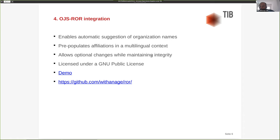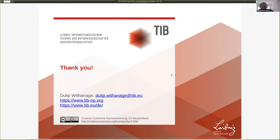If the editor wishes to modify the organization name and still maintain the ROR identifier, it is also possible using the plugin. This can be helpful if the name of the faculty should be displayed alongside the organization name. This plugin is released under a public license allowing free use for any community member. After inserting the ROR ID, the ROR logo with a link to the affiliated institution will be displayed under the author name in the OJS article landing page. I have also linked a demo of how the plugin works — you can access it on GitHub. All the code is free. Thank you all for listening. I'm happy to answer anything about ROR and OJS.